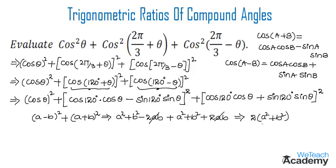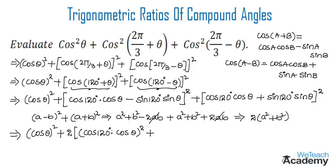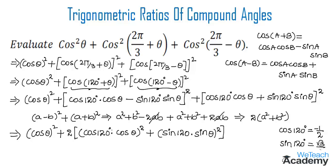So we can write this as cos²θ + 2(a² + b²), where a = cos120°·cosθ and b = sin120°·sinθ. Now we find: cos120° = −1/2 and sin120° = √3/2.